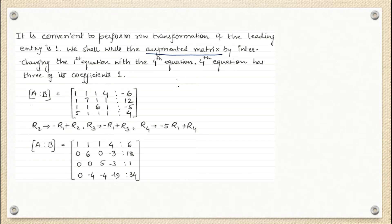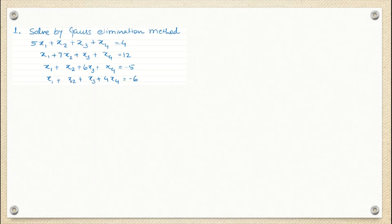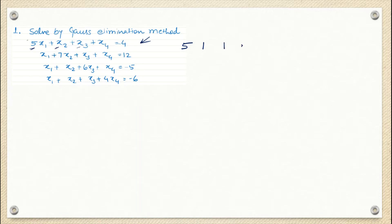What is augmented matrix? If you want to write this system into matrix form, you write down the coefficients in one place. Writing only the coefficients from the left hand side: 5, 1, 1, 1. If nothing is there with X2, that means one is there for sure.